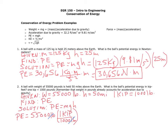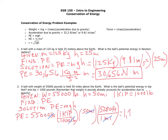We cancel out the pounds, giving us 55,000 divided by 1,000 kips, times the height of 50 miles. But we need feet, so we convert using 5,280 feet per mile, which cancels out the miles. Now we have kip feet. When we multiply that out, we get a very big number: 1,452,000 kip feet.